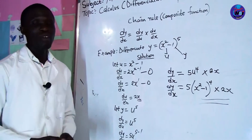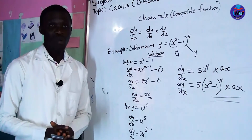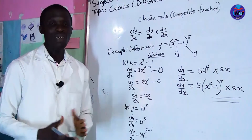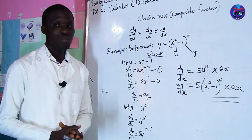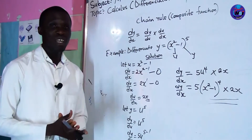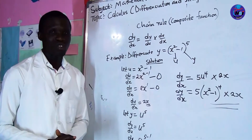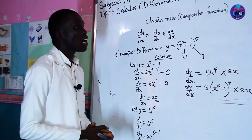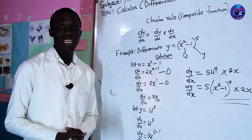I believe you understand. I've explained general equation applicable to differentiation, I've explained product rule, first principle, and chain rule. I'm going to explain more to you about quotient rule. So let's go to the last part of this lesson, which is integration.